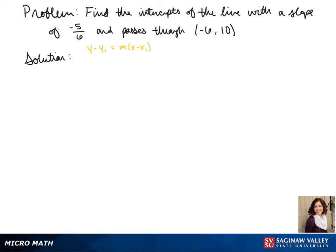So we'll be using our point slope form to write the equation of our line. So we do y minus 10 equals negative 5 sixths times x plus 6.